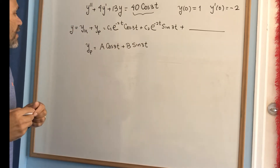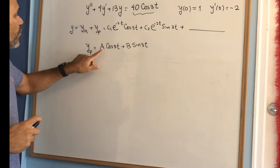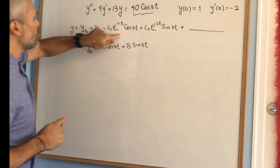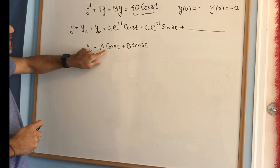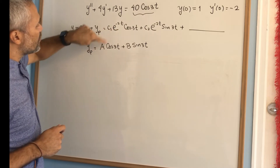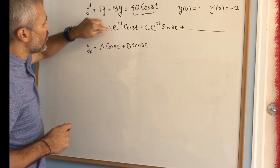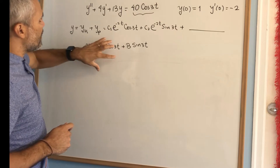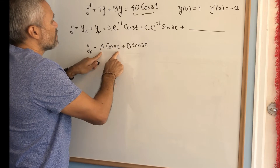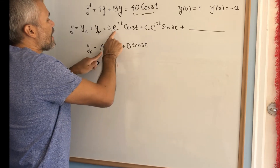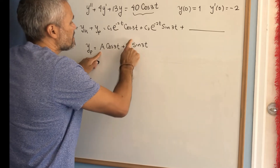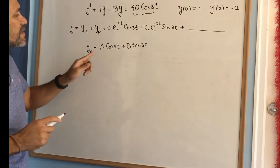We ask ourselves: do we need a second guess? We look at the homogeneous solution and notice that even though this looks like a multiple of our particular solution guess, it is not — because we only need a second guess when the homogeneous contains your particular solution up to a constant number, and here the factor e^(−2t) is not a constant. So this guess is fine; we don't need a second guess.